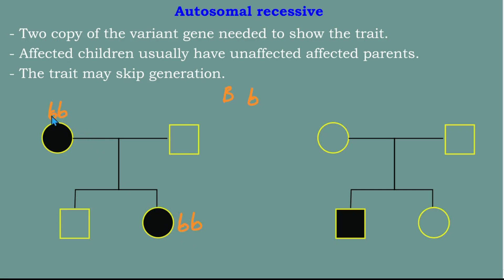If the daughter has the recessive trait, she must have gotten one small b from her mother and one from her father. The father does not show the trait, meaning he must be heterozygous (Bb) — the dominant B masks the recessive b. The son gets one small b from his mother and the capital B from his father, making him heterozygous (Bb).